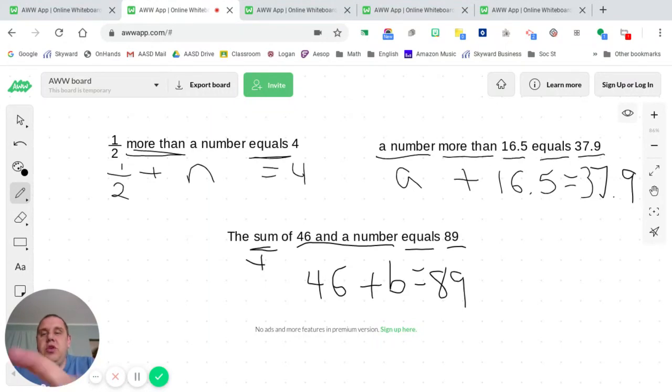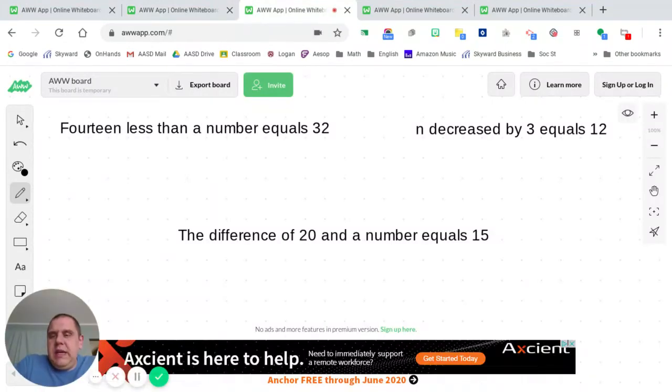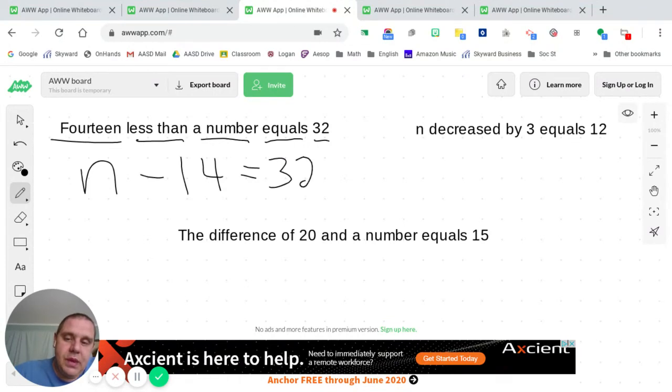Now we're going to take a few examples of subtraction and look at those. 14 less than a number equals 32. Look at how that's chunked. The only thing you've got to be careful with with subtraction is which order do you put your terms in? Are we going to write 14 minus a number or a number minus 14? If you think about this, 14 less than a number, so 14 has to come second because it's less than this number. So the number is the first term that we're going to start off with. Minus 14 equals 32. If you wrote 14 minus N equals 32, that would be incorrect. You need to make sure that you write N minus 14.